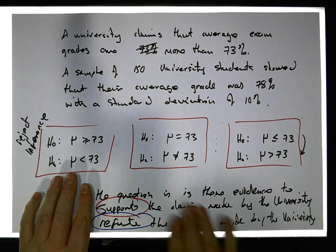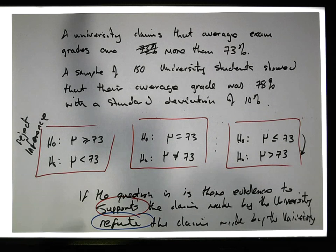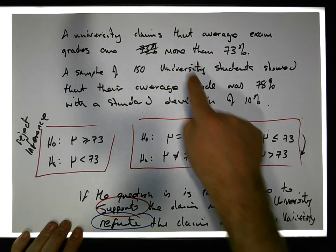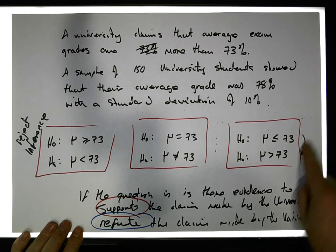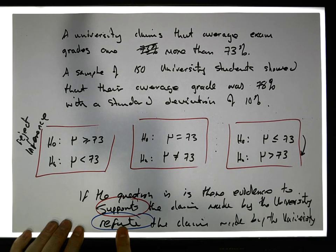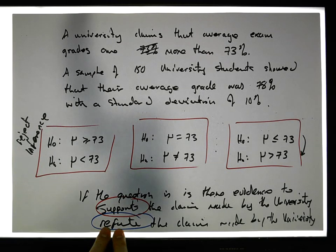So we have three possibilities with respect to a hypothesis. In this case, the claim is more than 73%. Is there evidence to support this claim? To support it, this is the scenario here. Is there evidence to refute it? If we're talking about refuting the claim, down here, refuting, this would refute the claim.